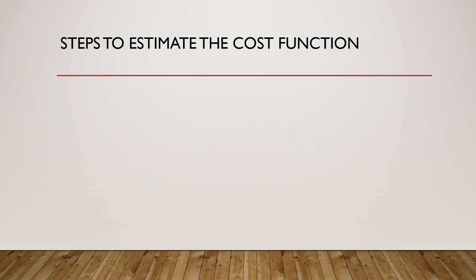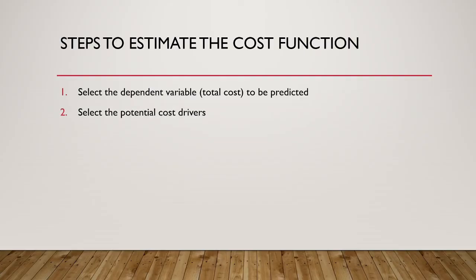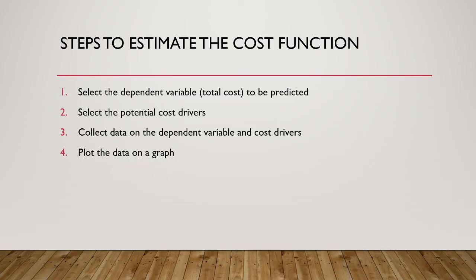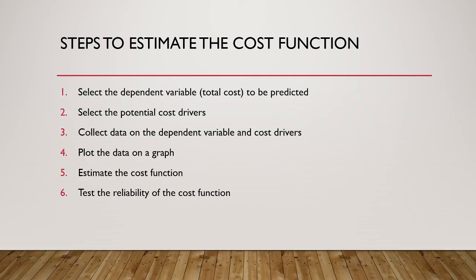Now that we know what the cost function looks like, how do we go about estimating it? We have six steps. First, we need to identify the cost we are trying to predict. We then need to select a variety of potential cost drivers. Once we have identified both of these items, we can start collecting our data. Next, we need to plot the data onto a graph — this will help us to visualize the data and see if it has a linear relationship. For the purposes of this series, we are going to be focusing solely on linear relationships. Once we have confirmed a linear relationship, we can use one of various techniques to estimate the cost function. Finally, we need to test the reliability of our cost functions to identify which cost driver, or combination thereof, best predicts our costs.